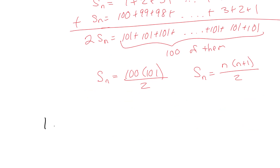So the closed-form formula is: L(n) = 1 + n(n+1)/2.